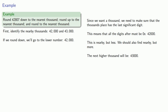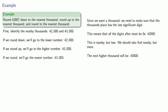If we want to round up, we go to the higher number, 43,000. And if we simply round, we want to go to the nearest number. We see that 43,000 is a little bit closer than 42,000, so we round to 43,000.